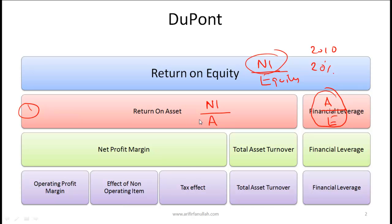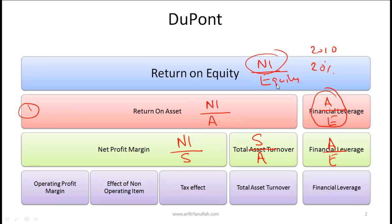Return on assets can be further decomposed into net profit margin times total asset turnover. Net profit margin equals net income divided by sales, and total asset turnover is sales divided by assets — sales cancel out leaving net income over assets. The financial leverage ratio stays the same, so multiplying these three components brings us back to net income over equity.